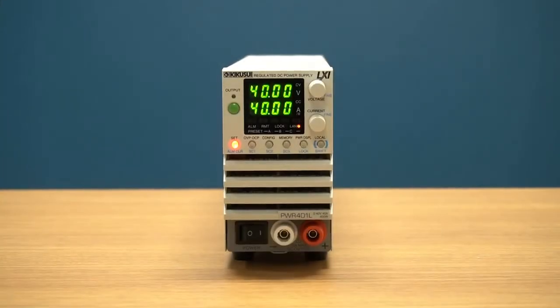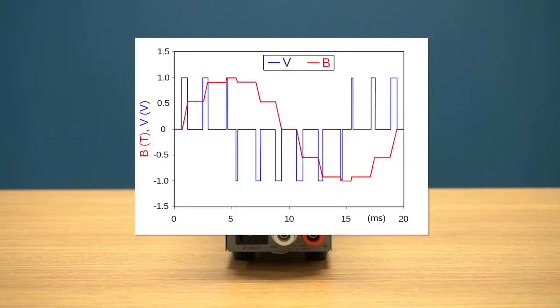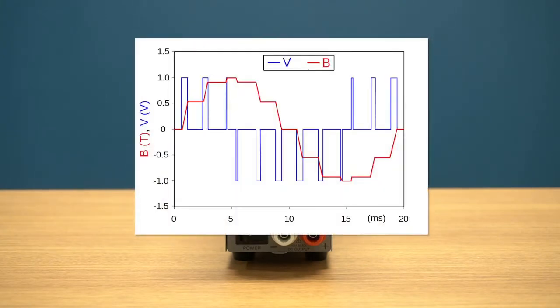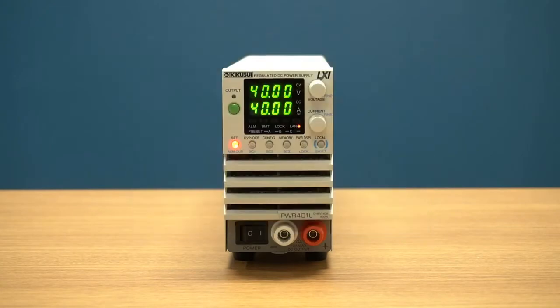On the other hand, switching DC power supplies regulate output voltage through a process known as pulse width modulation. This process generates some high frequency noise, but enables the power supply to be highly power efficient with a small form factor.